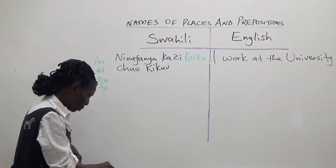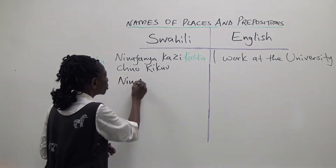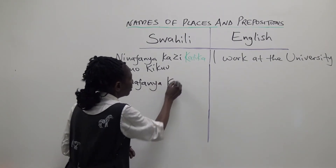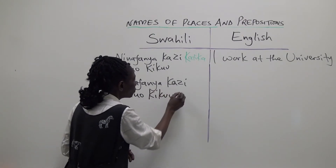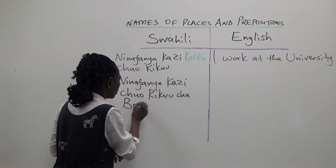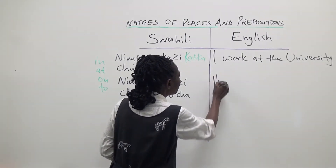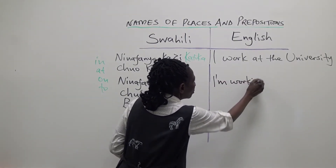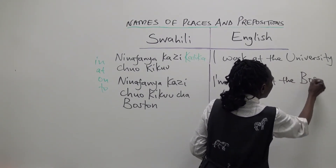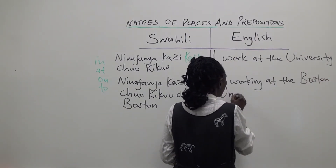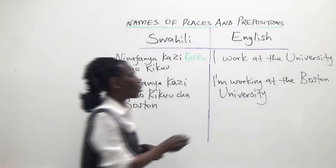The second sentence does not have a preposition. It is: ninafanya kazi chuo kikuu cha Boston. The translation of this sentence would be: I work at the University of Boston.